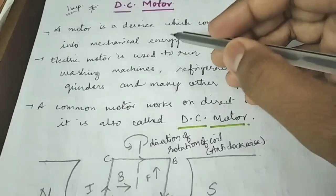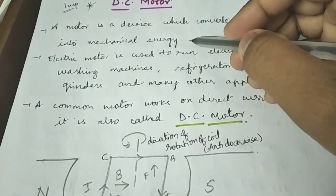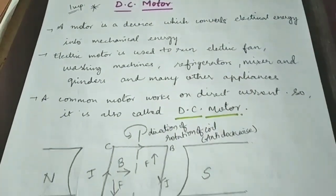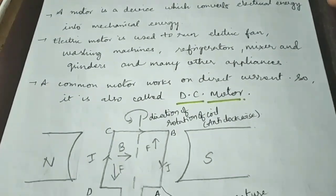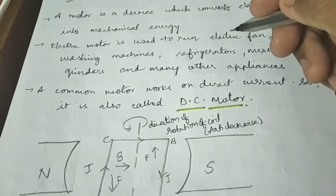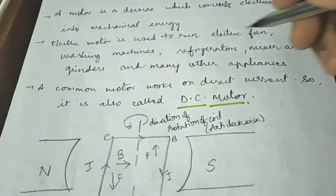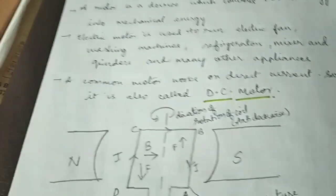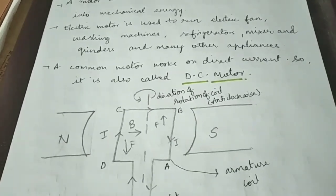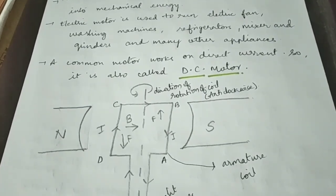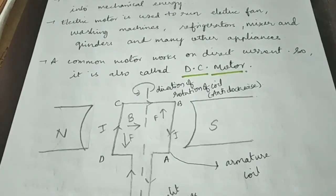The question is how it is converting electrical energy to mechanical energy. Electric motors are used to run electric fans, washing machines, refrigerators, mixers, grinders, and all these appliances. Electric motors commonly work on direct current, so it is called a DC motor.